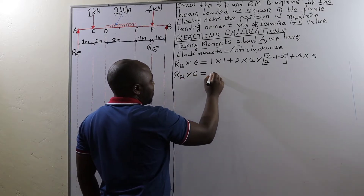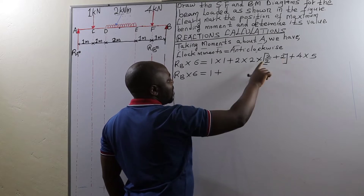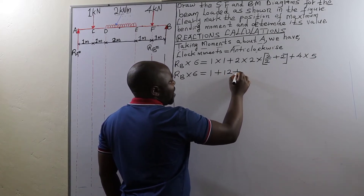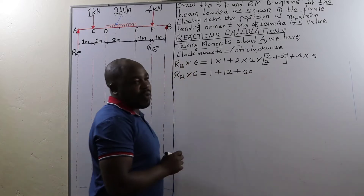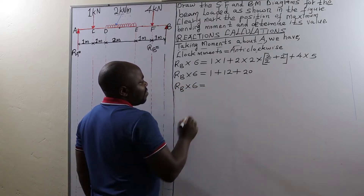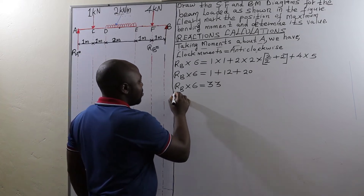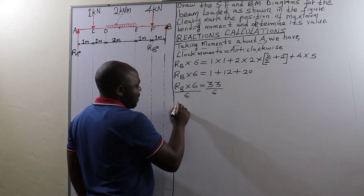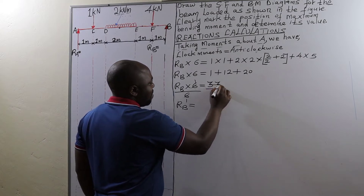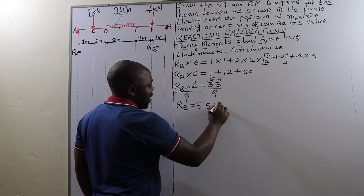So RB times 6 is going to give us: 1 plus (2 divided by 2, that is 1, plus 2, that is 3) — 3 times 4 will give us 12 kilonewtons. Then we add 4 times 5, which is 20 kilonewtons. So RB times 6 equals 33 kilonewtons. Therefore, to get the value of RB, we divide both sides by 6, and the reaction at B is equal to 5.5 kilonewtons.